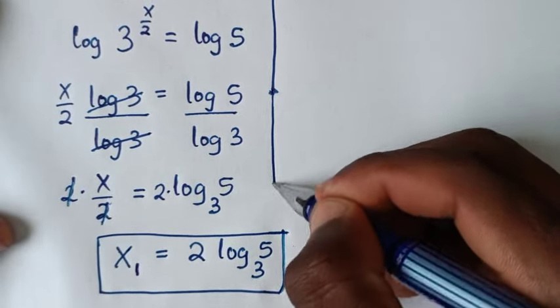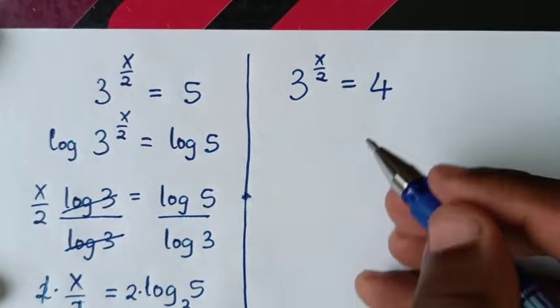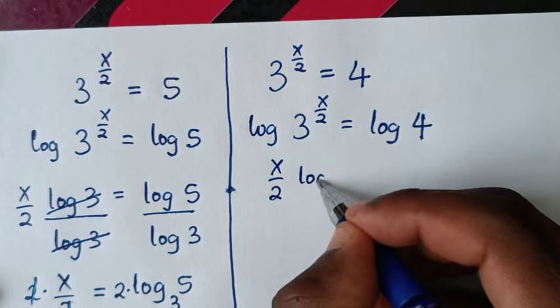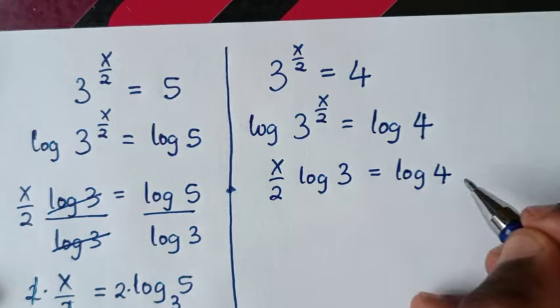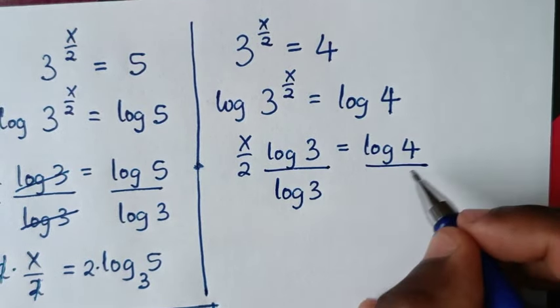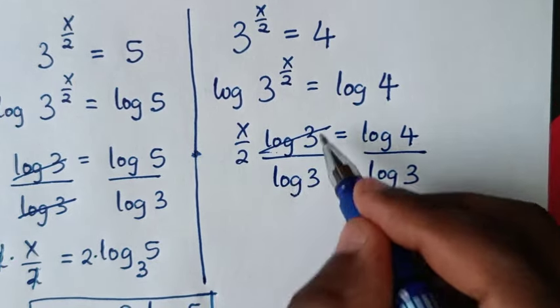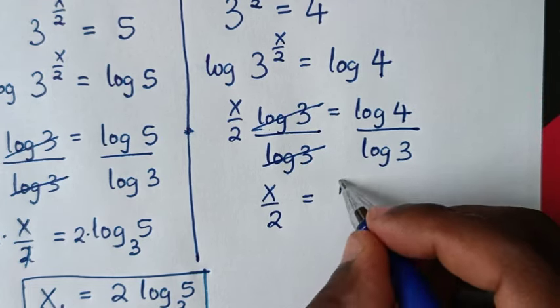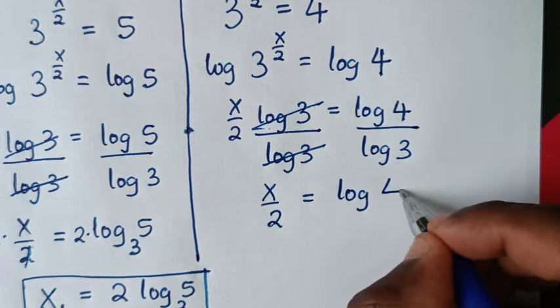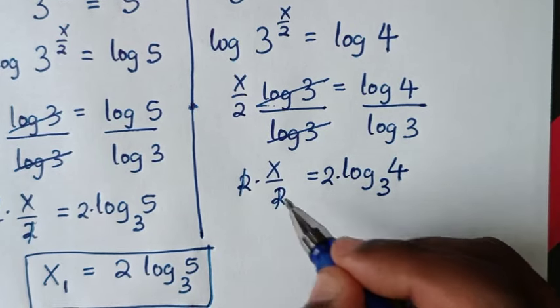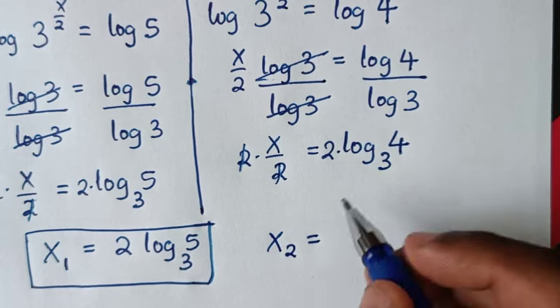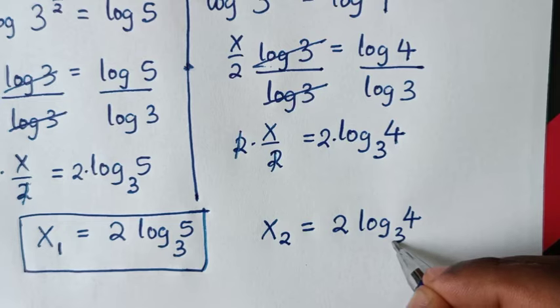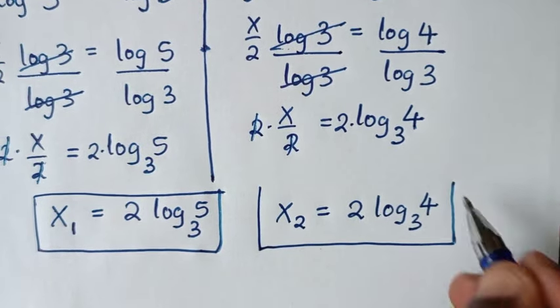Now to solve the second solution, we apply log to both sides: log(3^(x/2)) = log 4. The power x/2 moves to the front: (x/2)·log 3 = log 4. Dividing both sides by log 3 gives x/2 = log 4 / log 3 = log₃4. Multiplying both sides by 2, the second value of x = 2·log₃4.